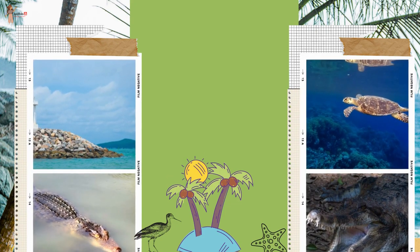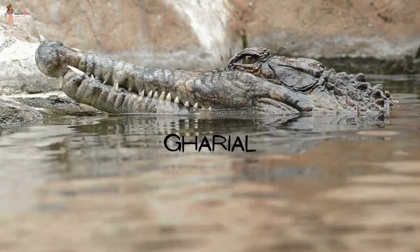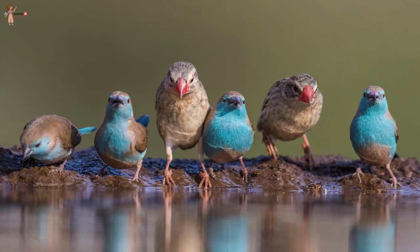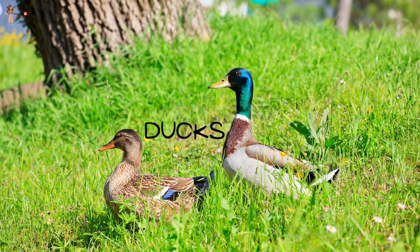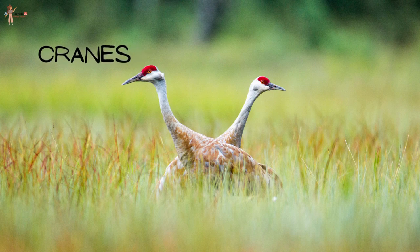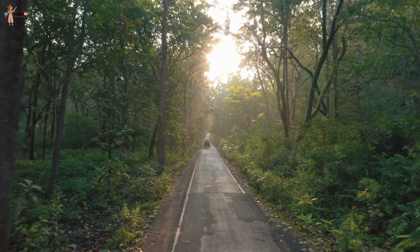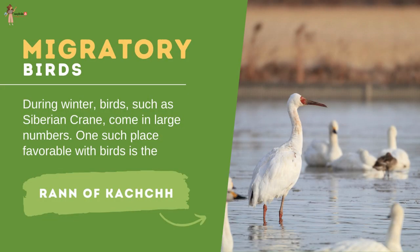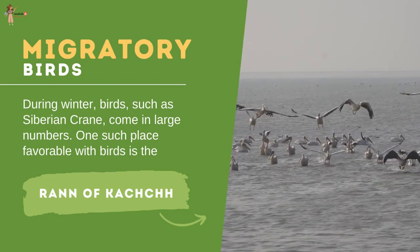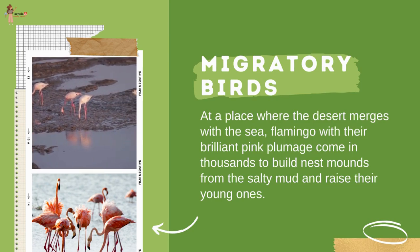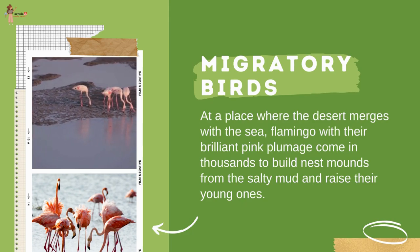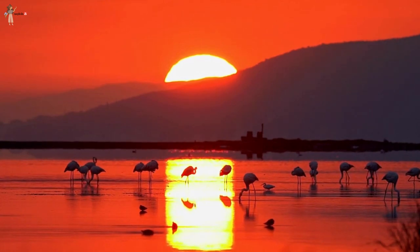In rivers, lakes and coastal areas, turtles, crocodiles and ghariyals are found. The gharyal is the only representative of its variety of crocodile found in the world today. Bird life in India is colorful — peacocks, pheasants, ducks, parakeets and pigeons inhabit the forests and wetlands of the country. Some wetlands are popular with migratory birds; during winter, birds such as the Siberian crane come in large numbers. In the Rann of Kutch, flamingos with brilliant pink plumage come in thousands to build nest mounds from salty mud and raise their young ones.